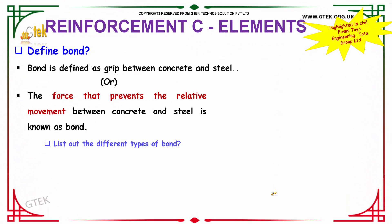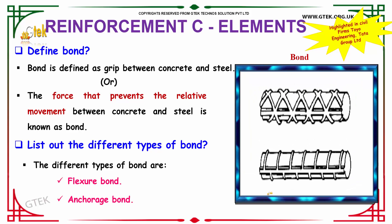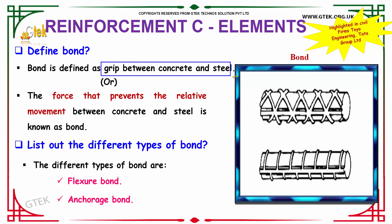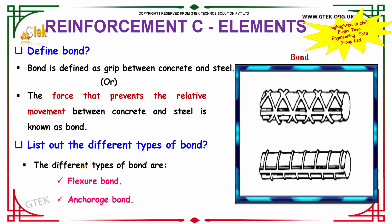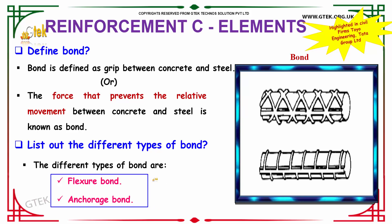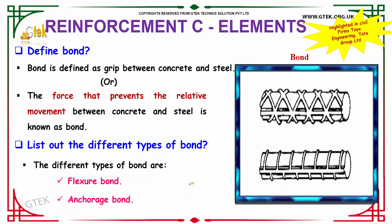Our next question is: define bond. Bond is defined as the grip between concrete and steel. The force that prevents the relative movement between concrete and steel is known as bond. The different types of bond are flexure bond and anchorage bond. These two types of bond provide the grip between concrete and steel.